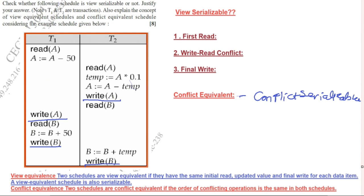This write operation is on variable A and it is in T2. We have to check in T1 if there is any operation on A. Variable A is being read in T1, so the sequence is read in T1 then write in T2. Read A is T1 and write A is T2.